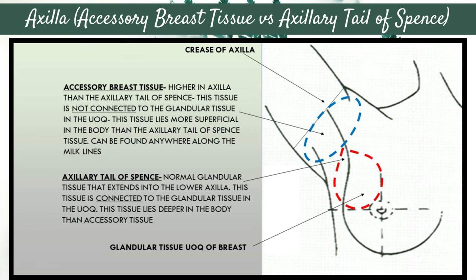Here's a diagram that illustrates the difference between accessory breast tissue and the axillary tail of Spence. The axillary tail of Spence is normal glandular tissue that extends into the lower axilla and is connected to the glandular tissue in the upper outer quadrant. This tissue lies deeper in the body than the accessory breast tissue. Accessory breast tissue is most often higher up in the axilla, is not connected to the upper outer quadrant glandular tissue, and lies more superficial on the ultrasound image than the axillary tail of Spence tissue.